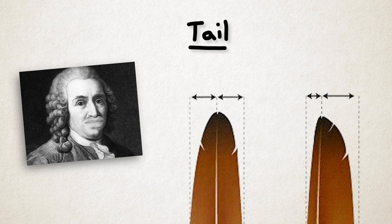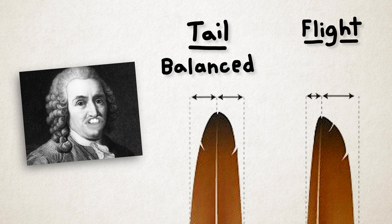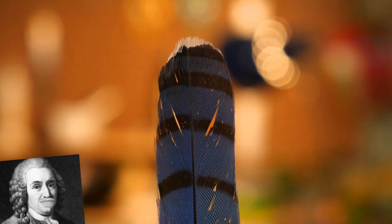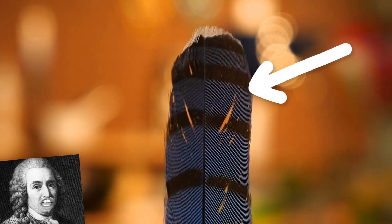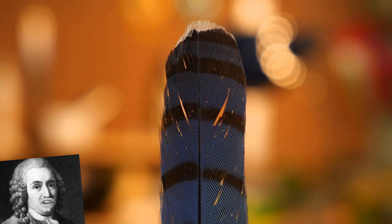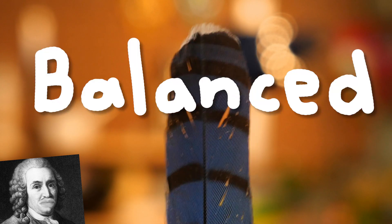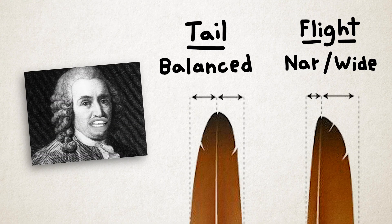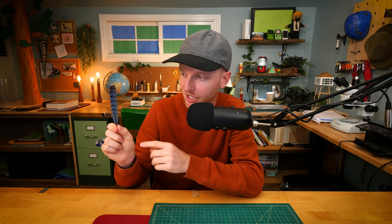So, tail feathers are relatively balanced on each side of the rachis — you see these parts, they're kind of the same. Flight feathers clearly have a narrow side and a wide side. Let's look at yours. I'm saying this side might look a little thicker than the other, but truthfully they're not very different. This would fall into the group of being more balanced. Balanced on both sides of the rachis means it's a tail feather. So we know this feather came from the tail of a blue jay.